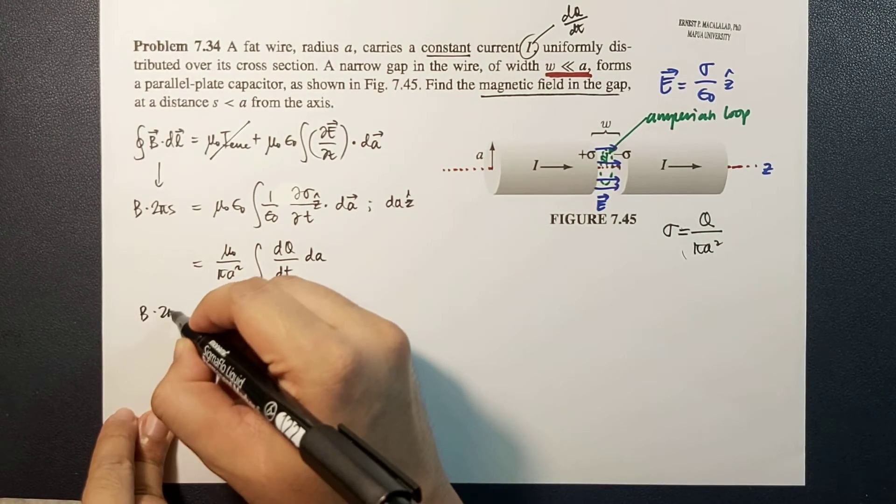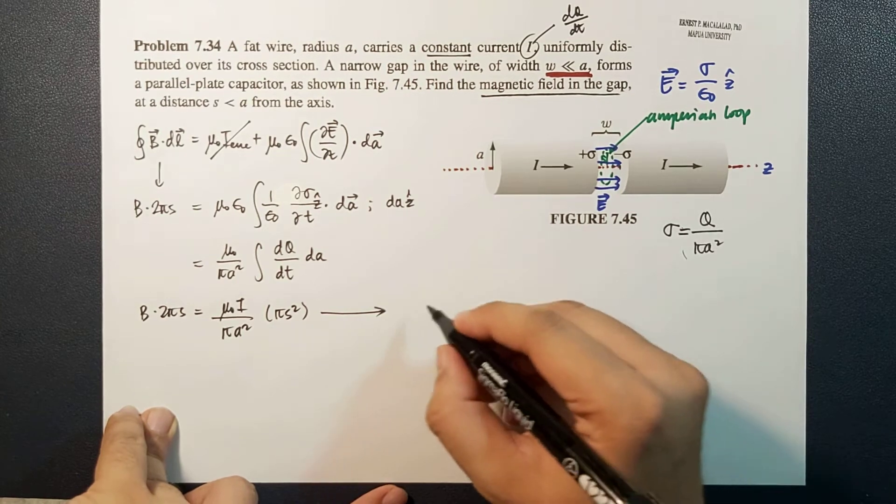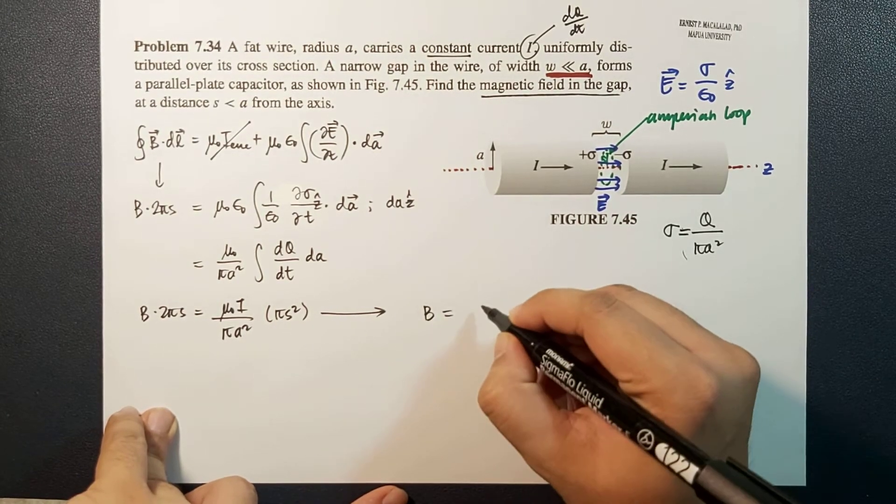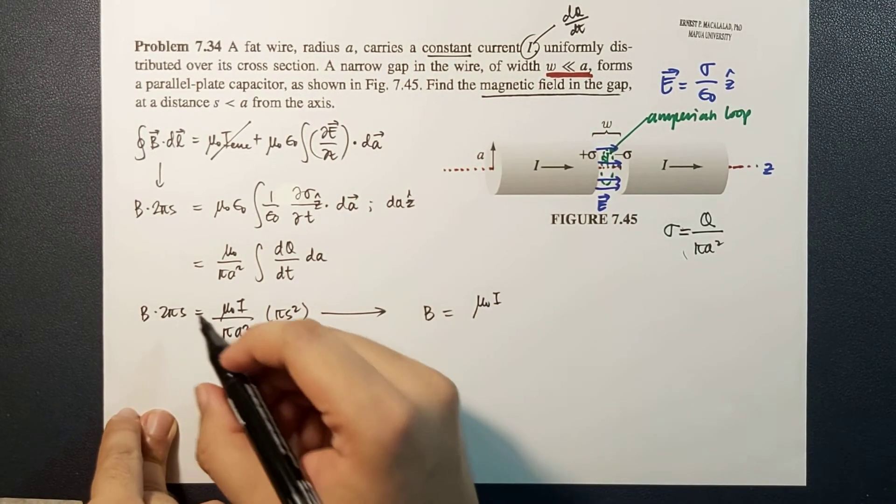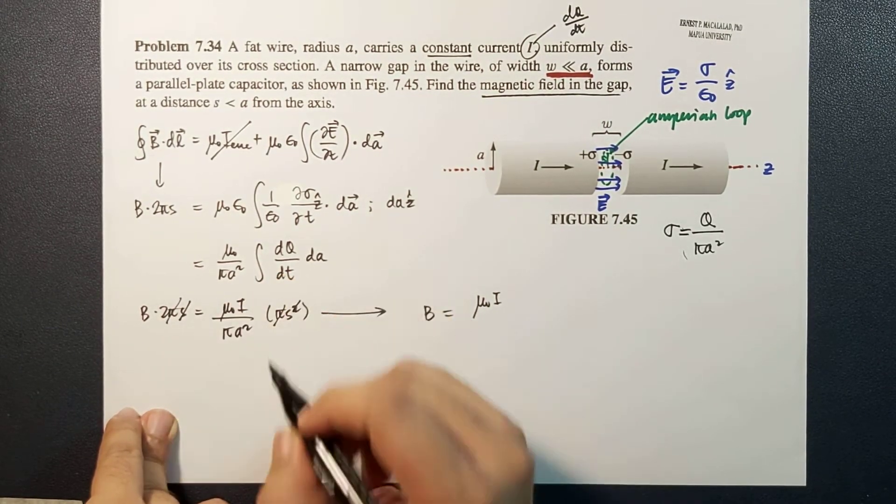So B times 2 pi S equals this. This will give us the magnetic field to be equal to mu naught I over 2 A squared S. Pi will cancel and one of the S here will cancel as well.